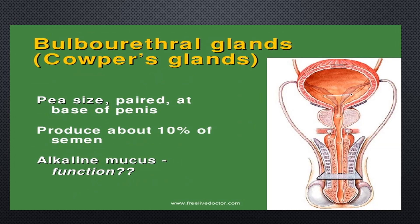The bulbourethral glands, also called Cowper's glands, are pea-sized, paired structures at the base of the penis. They produce about 10% of the semen as an alkaline mucous-like fluid. Their alkaline nature helps to neutralize the acidic environment of the urethra.